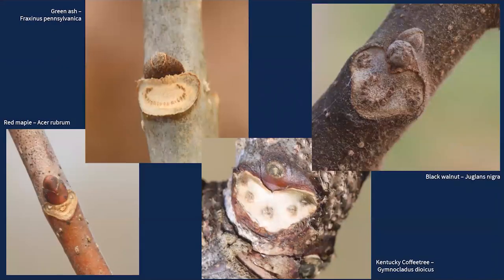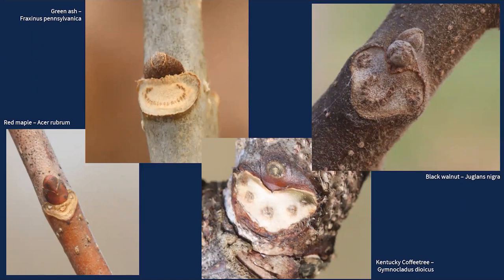Looking at examples: green ash has many small bundle scars shaped like a U; red maple has three distinctive little dots with a triangular leaf scar; coffee tree has very large bundle scars dispersed throughout the leaf scar; and black walnut has one of the neatest looking leaf scars — it has three lobes almost like a little monkey face, with three distinct regions where bundle scars occur. We use those a lot.